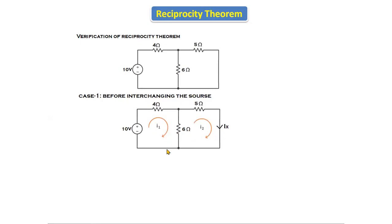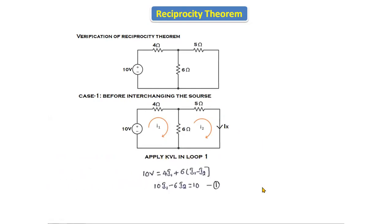We will apply mesh analysis using KVL in loop one. Applying KVL in loop one, we get: 10 volts equals 4·I1 plus 6·(I1 minus I2). The 6-ohm resistor is shared between the two loops, so we get the difference term 6·(I1 minus I2). Simplifying, we get 10·I1 minus 6·I2 equals 10.